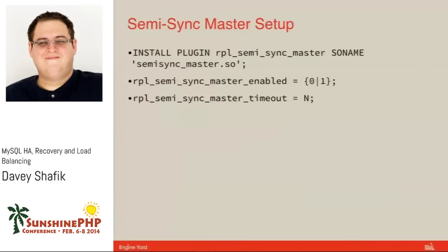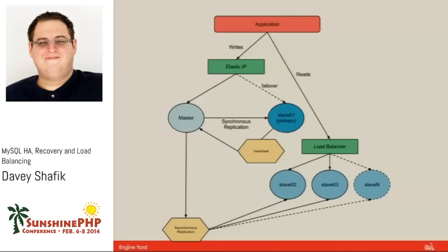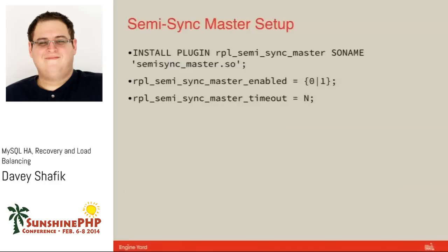What will happen in a failure scenario is you'll flip over to your primary slave, hook your regular slaves back up to that one, and they'll sync down and catch up. Setting up semi-sync is really easy. You just run install plugin with the semi-sync master plugin — that's a SQL command — and then set two settings in your MySQL configuration: whether it's enabled, and the timeout. That timeout is how you manage how long you're willing to wait to ensure data integrity. It is in milliseconds, so there's a minimum of one.